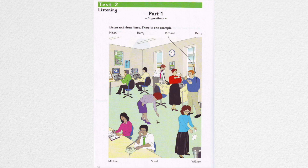Can you see the girl who's writing in her diary? Yes. What's her name? She's called Helen. She looks very happy. Yes, she is. Because tomorrow is Saturday and she doesn't have to work.